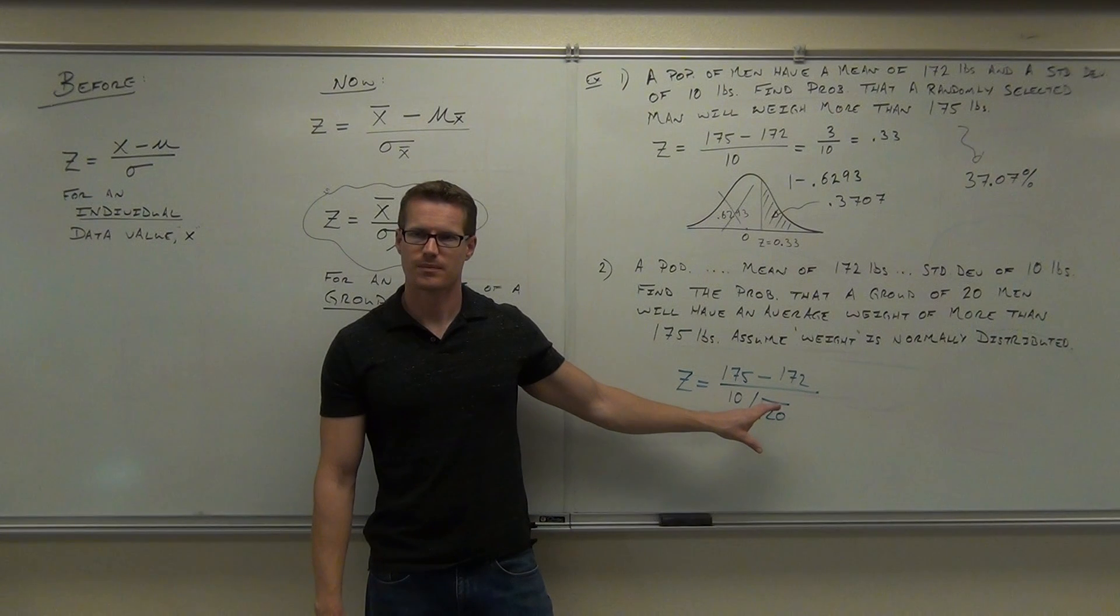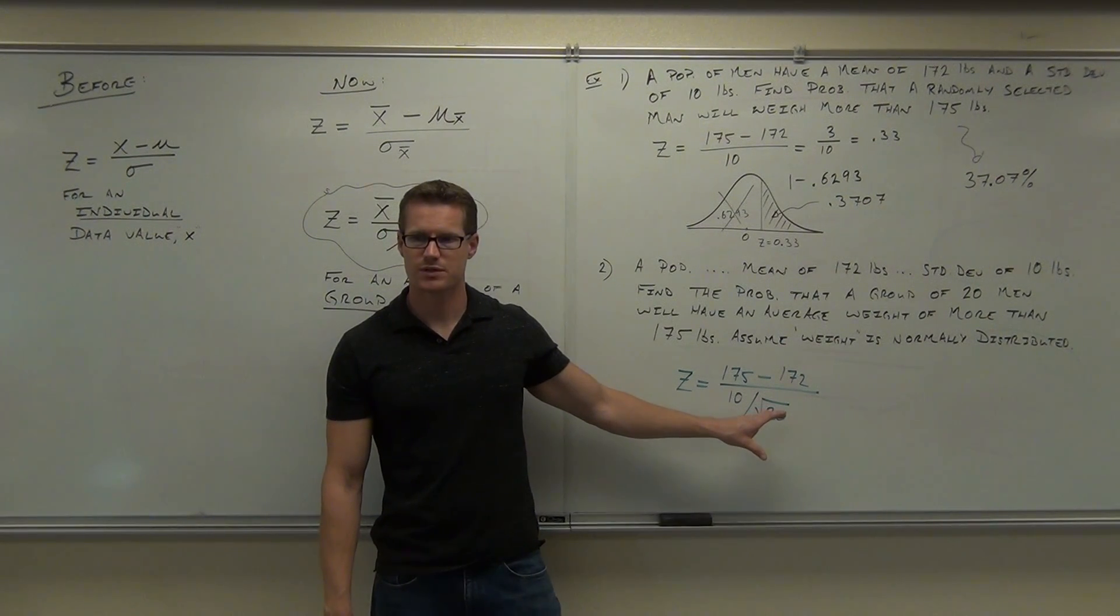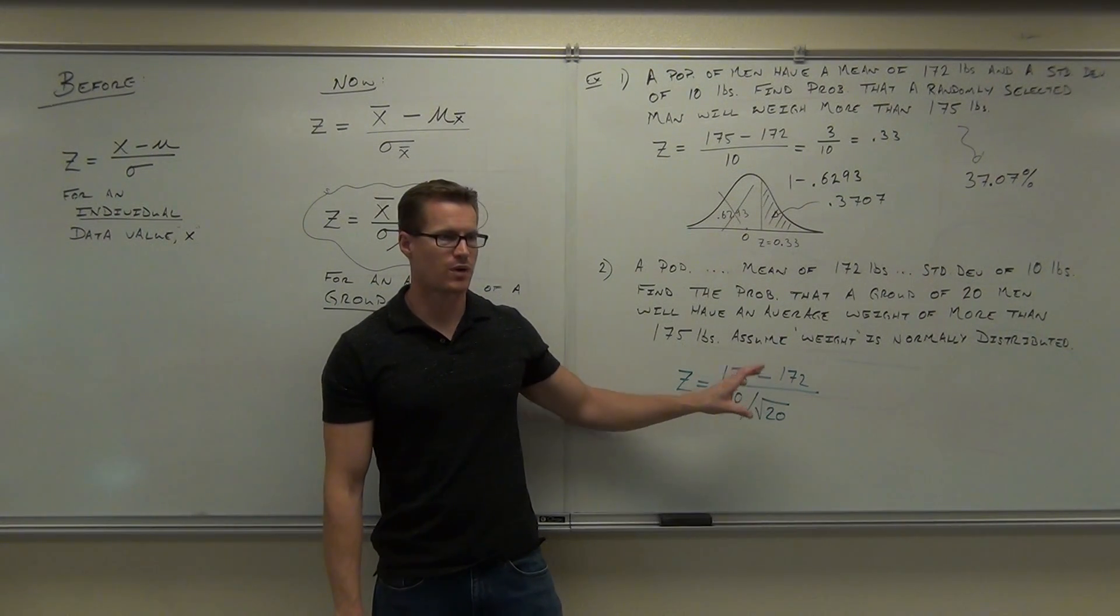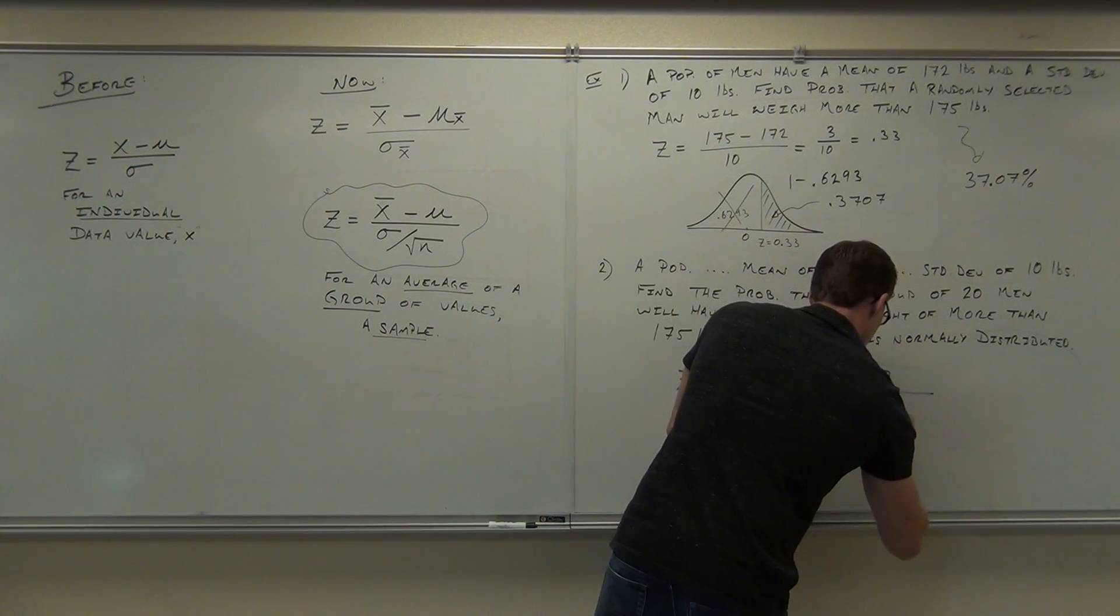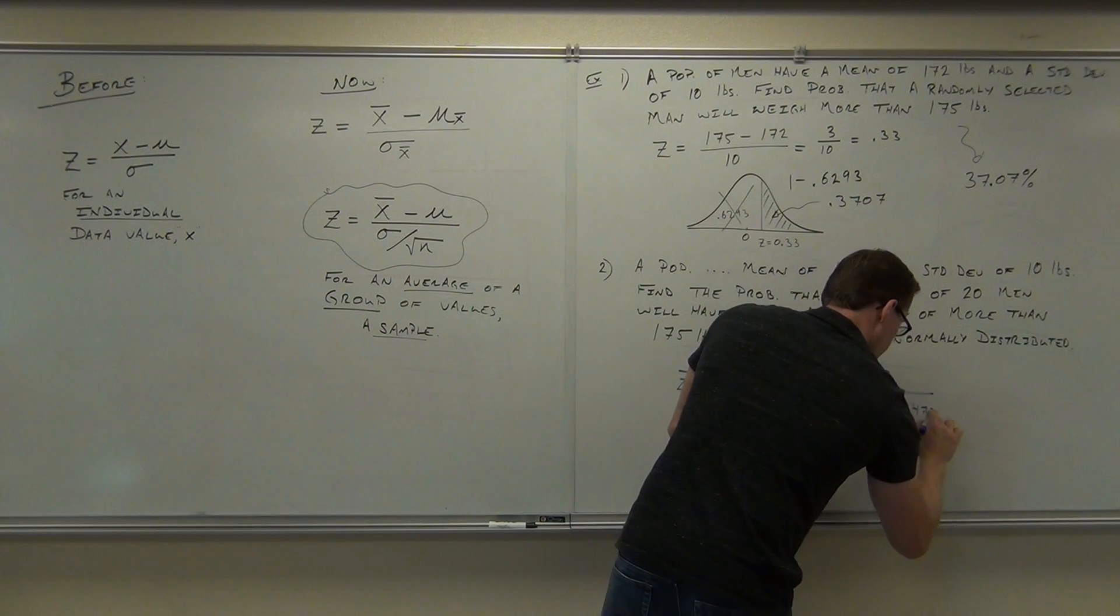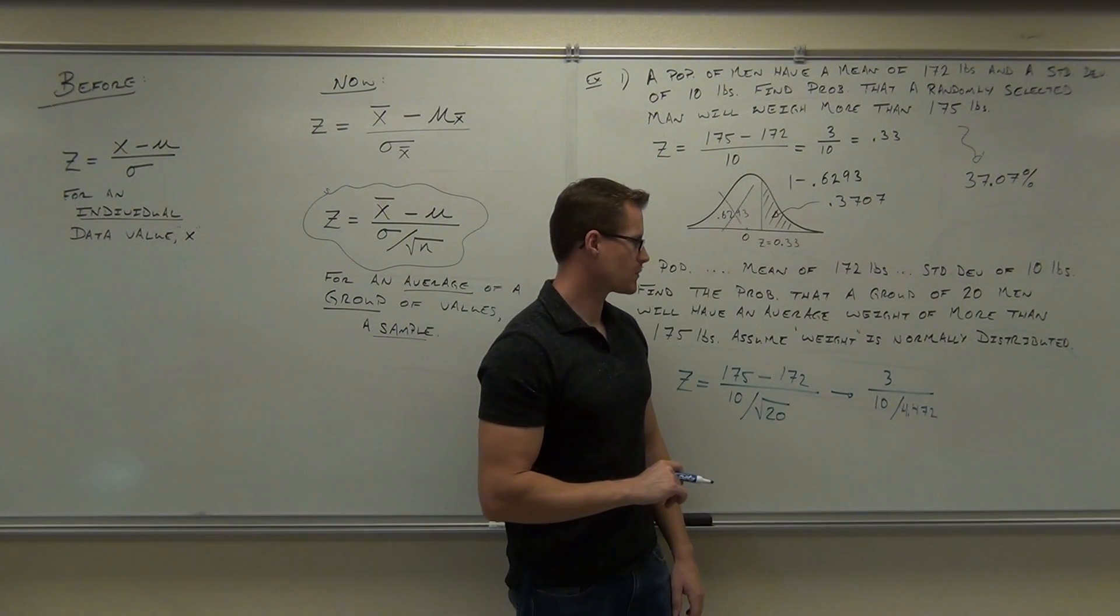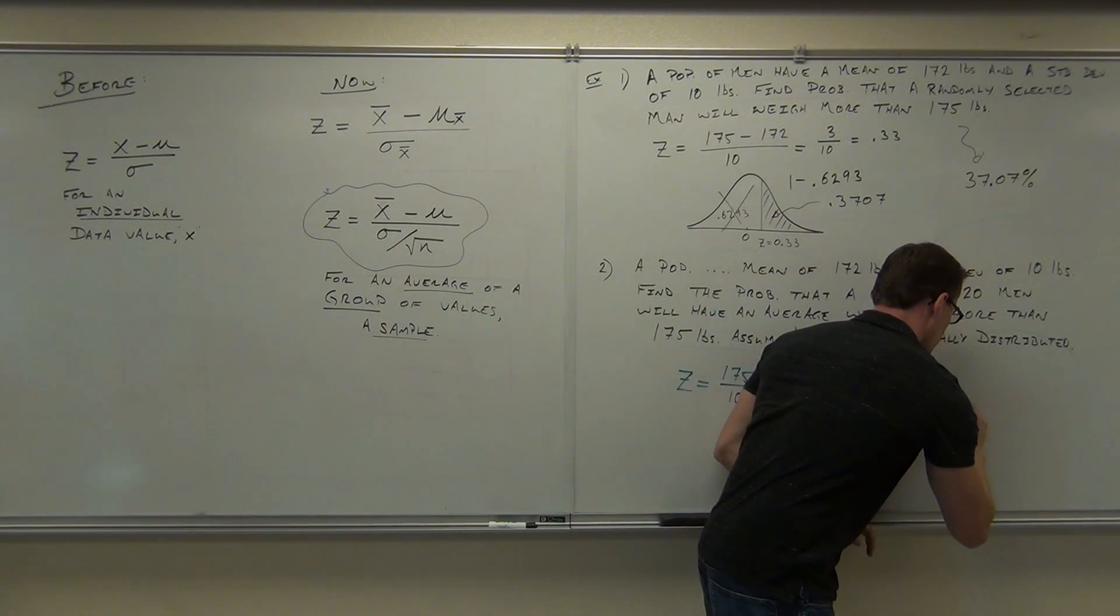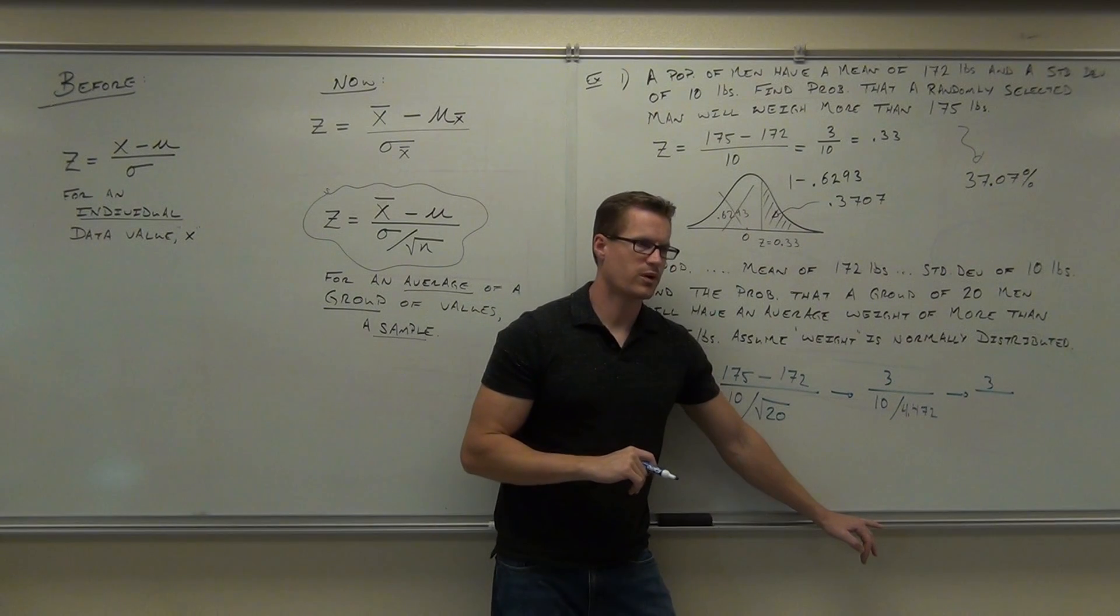What's the square root of 20? 4.472. By the way, don't round that if possible. What you're going to get is 3 over 10 divided by 4.472.